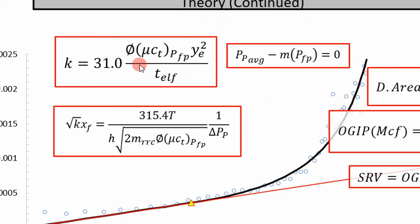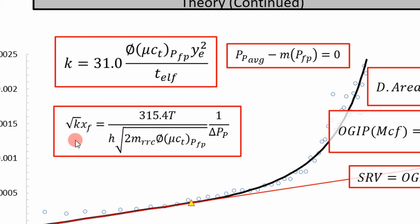So you can get permeability just knowing your time to the end of linear flow. And then you can get your square root of k·x_f — which is your square root of permeability times fracture half length — from using the slope. The slope in this case is M_RRC, so it's the slope of this line, along with your fluid properties, temperature, and formation height. And once you get that, you can essentially divide this result by the square root of k and you get fracture half length. Pause the video and work through that calculation exercise — it's just algebra.